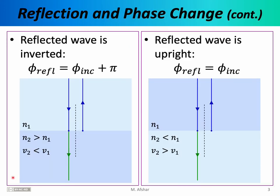To better understand the reflection of light, let's consider the two possible scenarios side by side. On the left, light comes from medium one into medium two with n2 greater than n1. On the right, n2 is less than n1. In both cases, we're talking about normal incidence — the incident beam is perpendicular to the boundary, so the angle of incidence is zero degrees. Some light is transmitted into the second medium and some is reflected. For thin film interference, we're primarily interested in what happens to the reflected light.